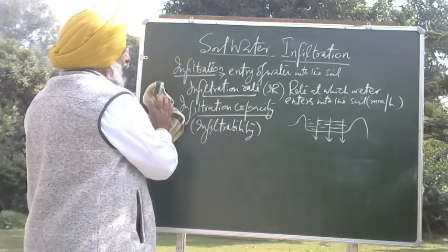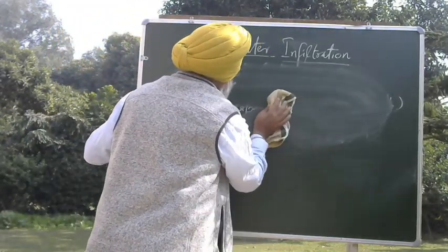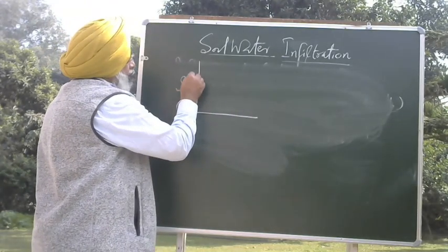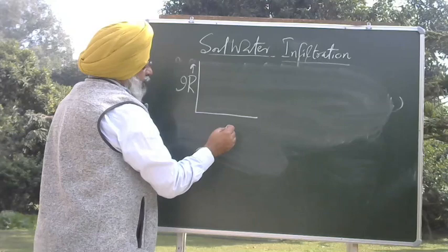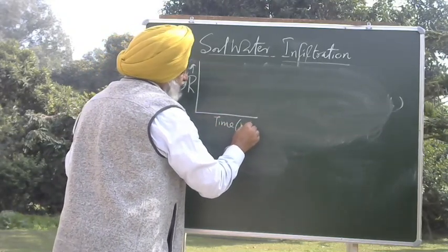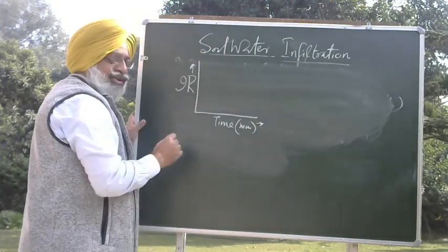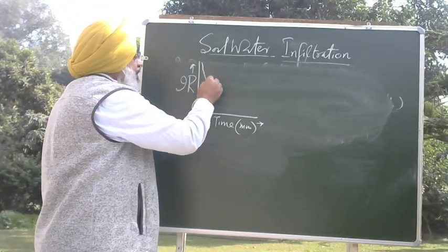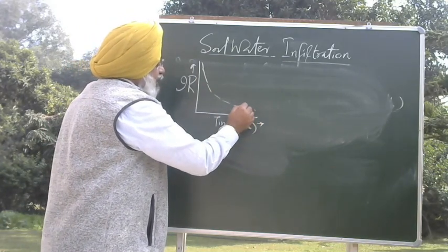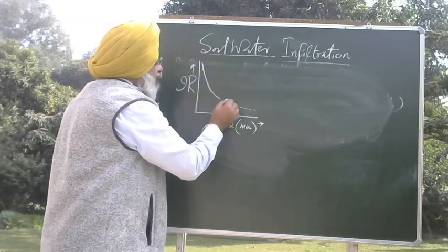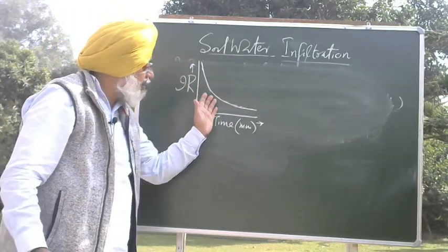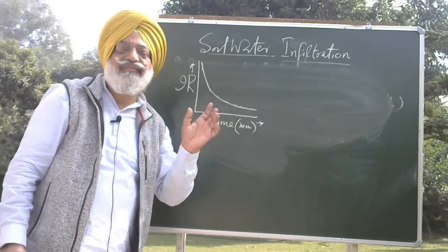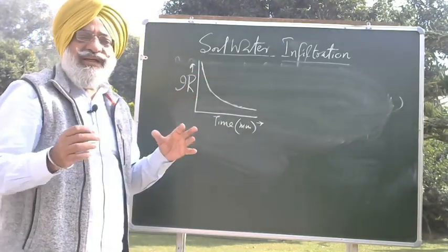When we apply water to the surface of the soil, either through rainfall or through irrigation, if we plot infiltration rate on one axis and time in minutes on the other, initially when your soil is dry, the infiltration rate will be higher. Then with time, the infiltration rate goes on decreasing, and ultimately it becomes constant and does not decrease any further.